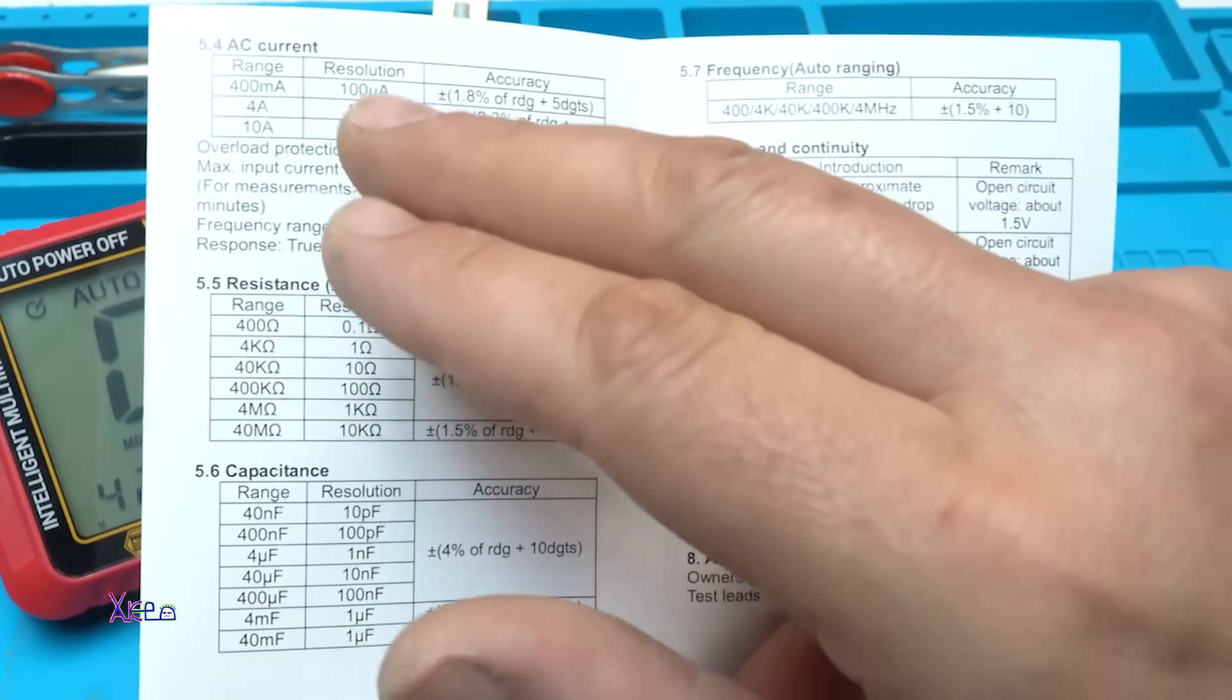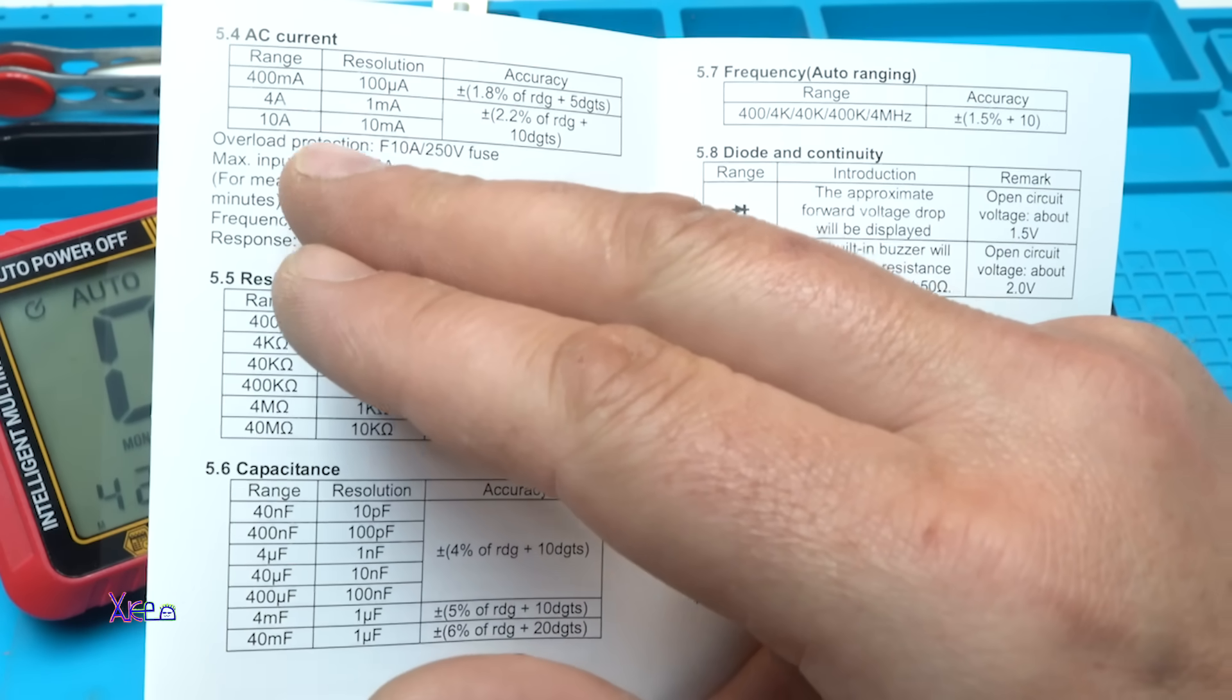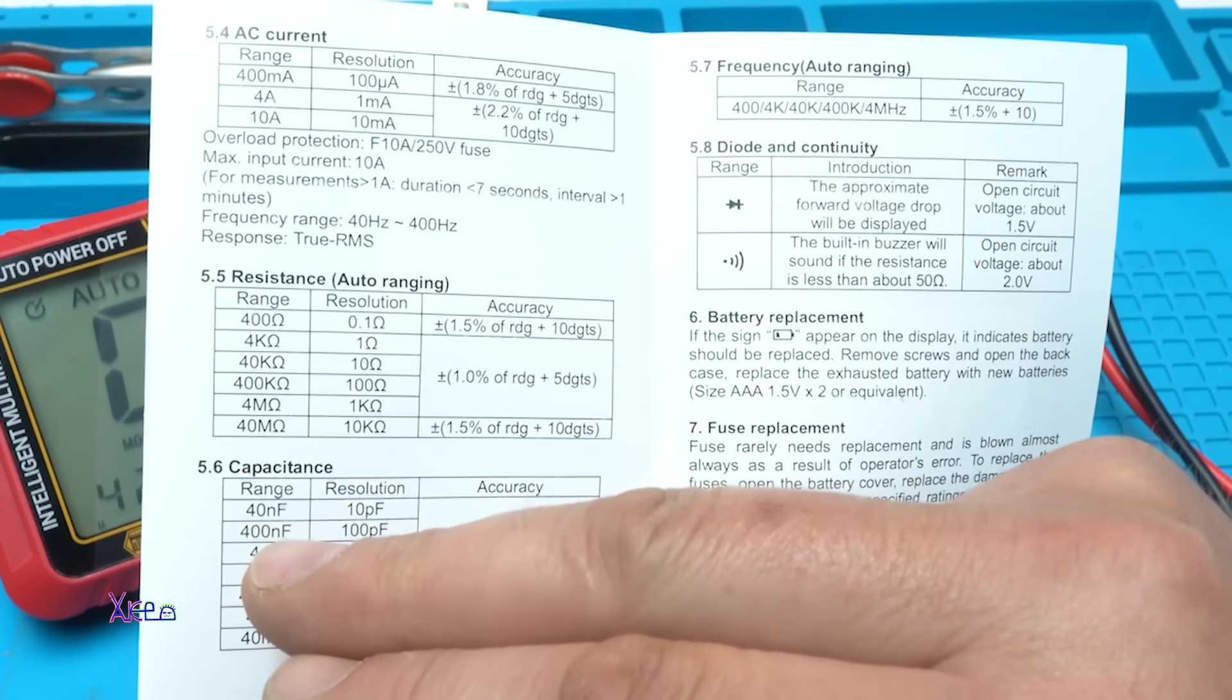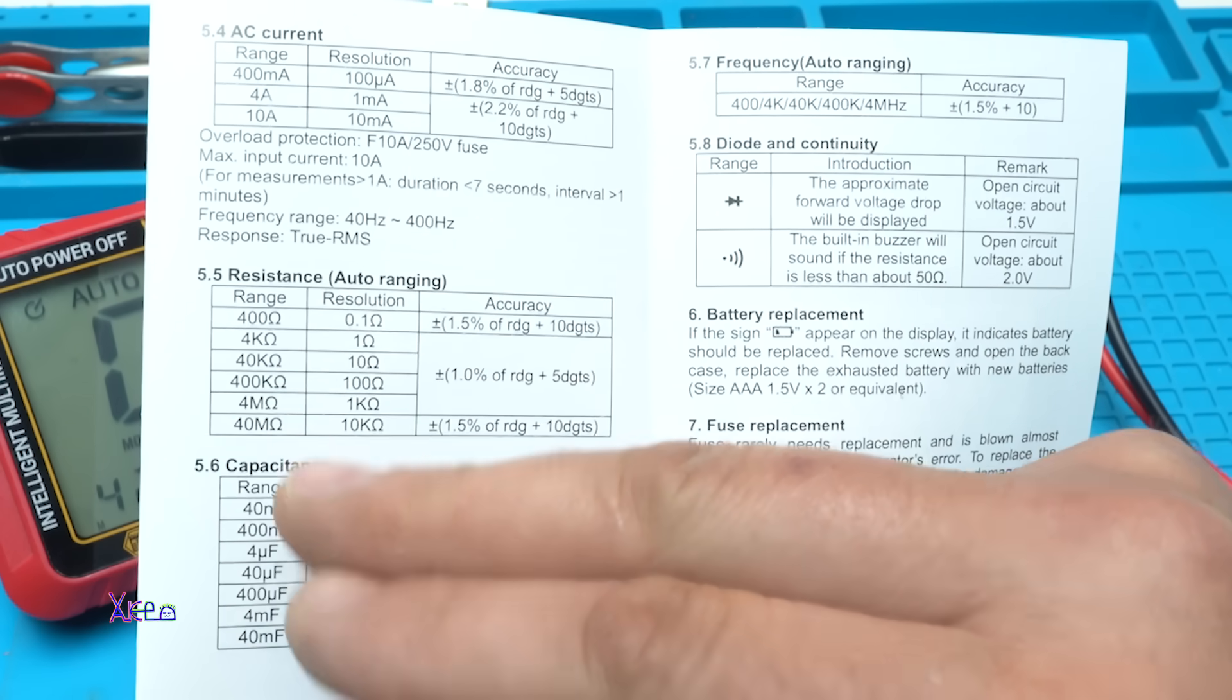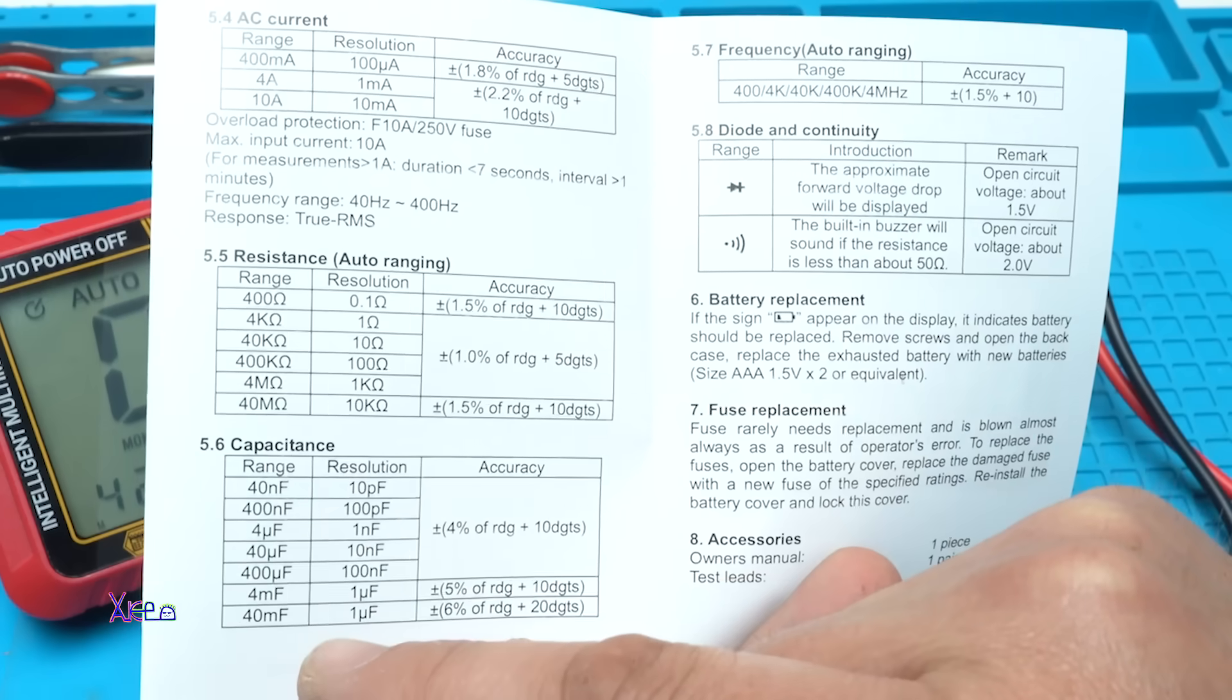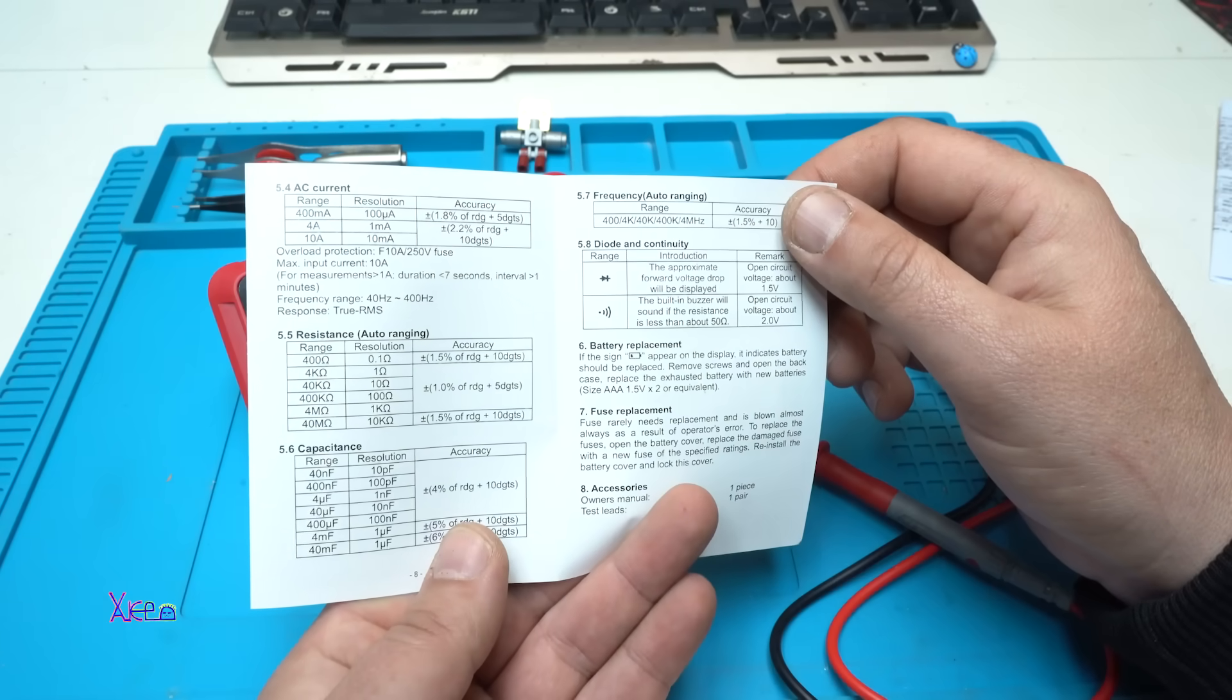It can measure AC current from range 400 milliamperes to 10 amperes. Resistance from 400 ohms, resolution 0.1 ohm, to 40 megaohms. Capacitance from 40 nanofarads to 40 microfarads. The frequency range is up to 4 kilohertz.